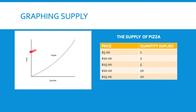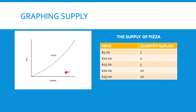So the law of supply: if we chart this, at low prices I'm not willing to produce any pizzas, at $5 I'd produce one, at $10 I'd produce two, at $15 I'd produce five, and so on. You see the opposite kind of curve from demand — an upward sloping curve. Remember, demand was downward sloping because it showed the opposite impact of prices. Low prices means low quantity supplied; high prices means high quantity supplied.